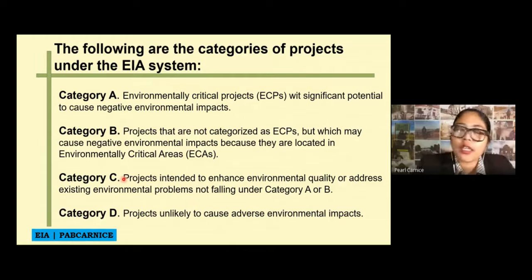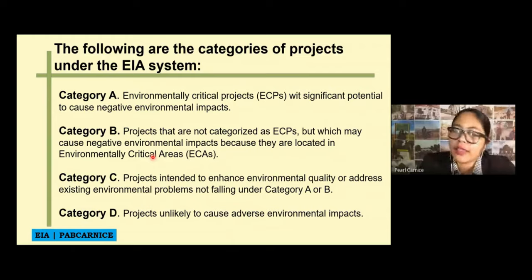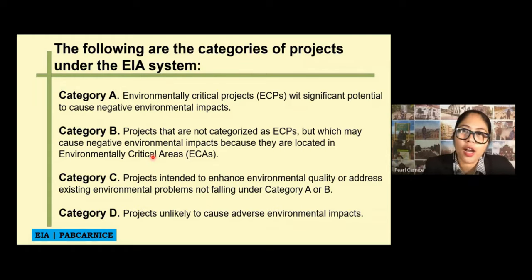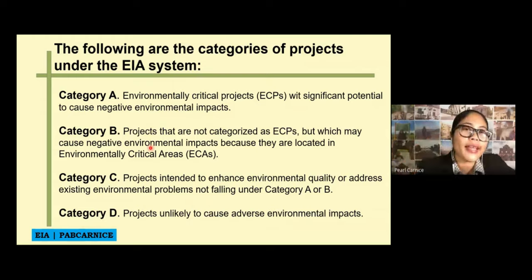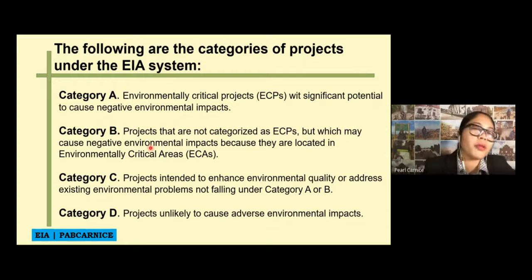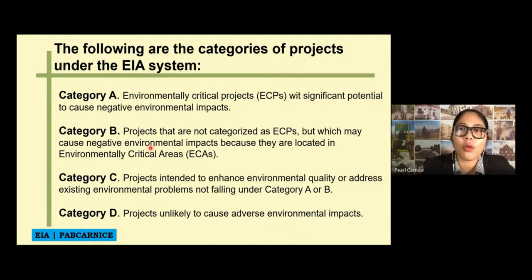Category C projects would enhance environmental quality or address environmental problems not under Category A and B. Category A and B definitely require an ECC — Environmental Compliance Certificate — issued by the DENR. Category C only requires a project description submission for an ECC to be issued. Category D projects will only secure a Certificate of Non-Coverage, or CNC, although the EMB may still require additional environmental safeguards.